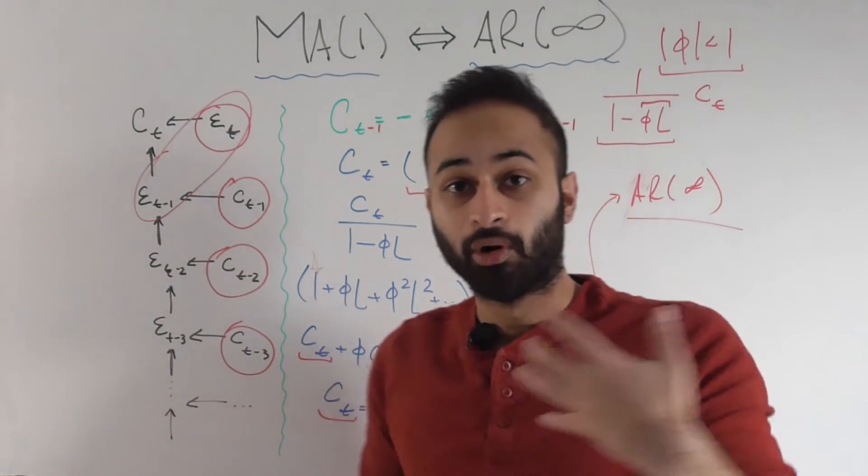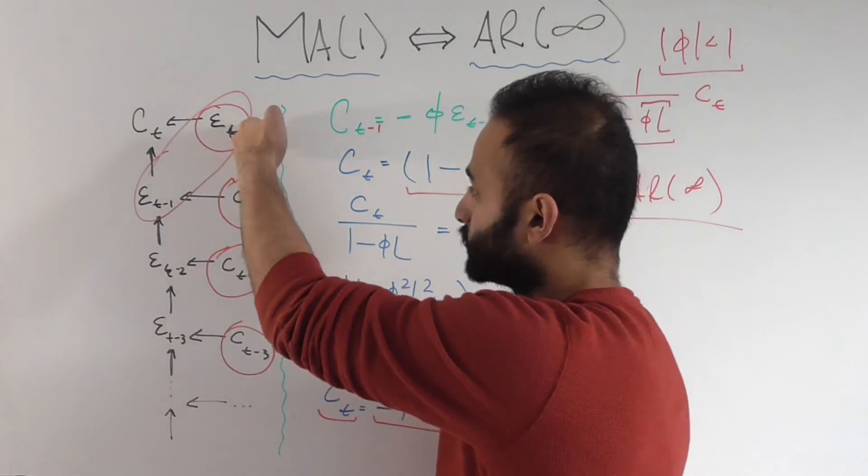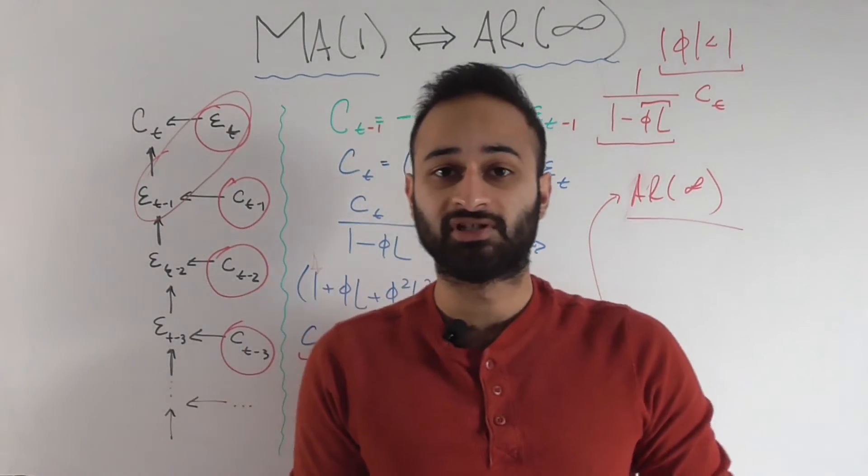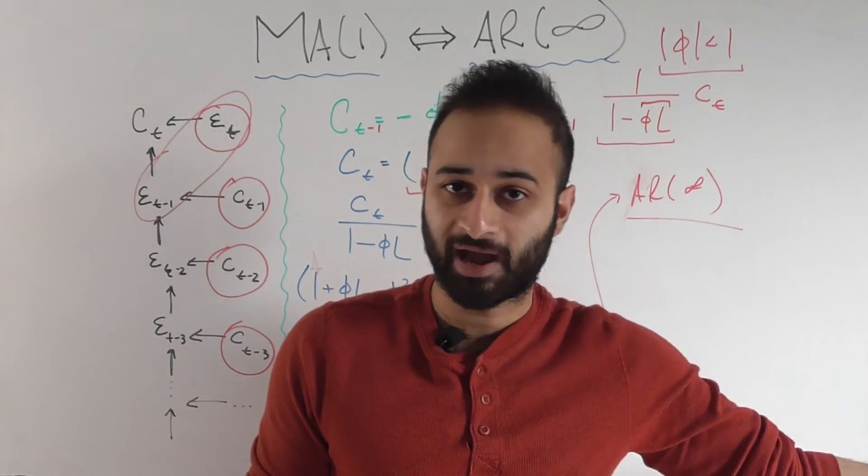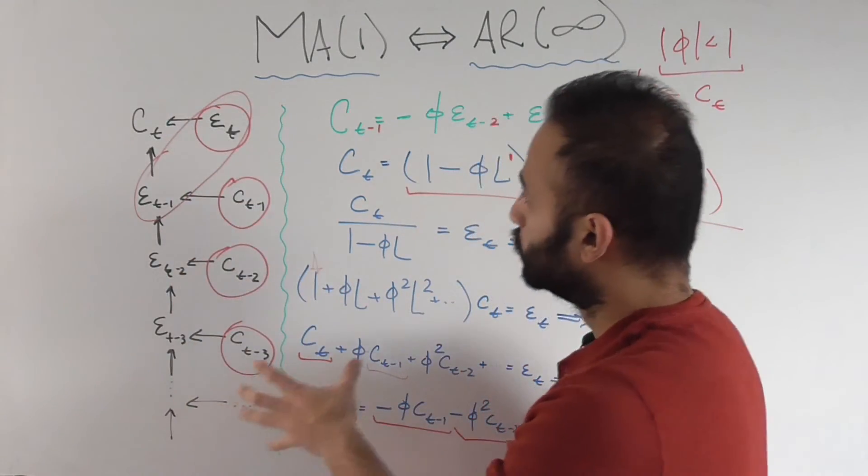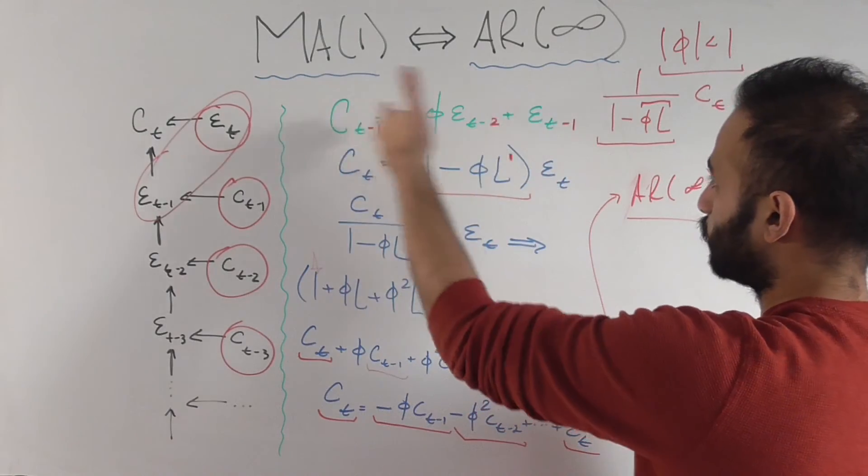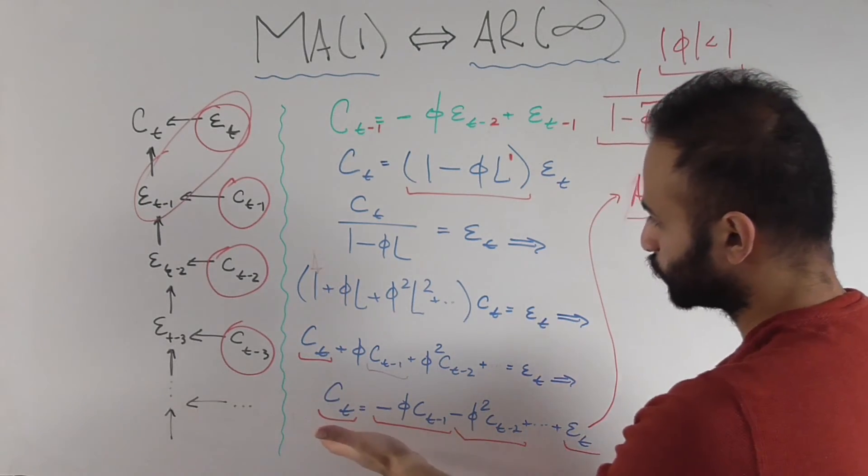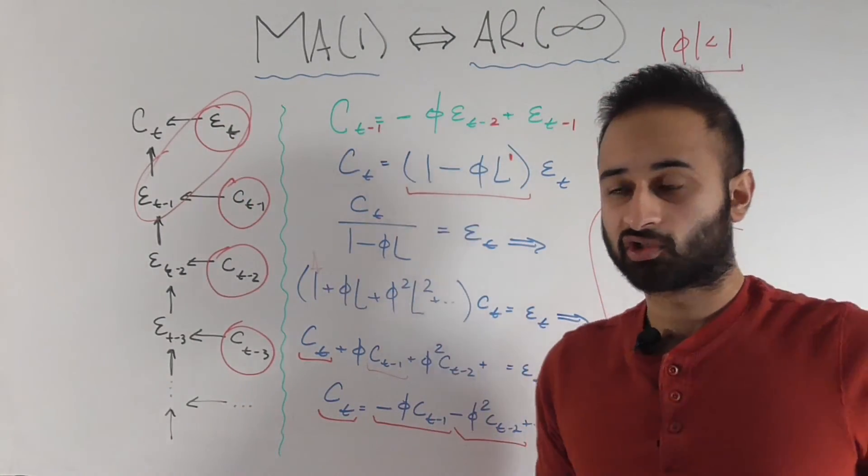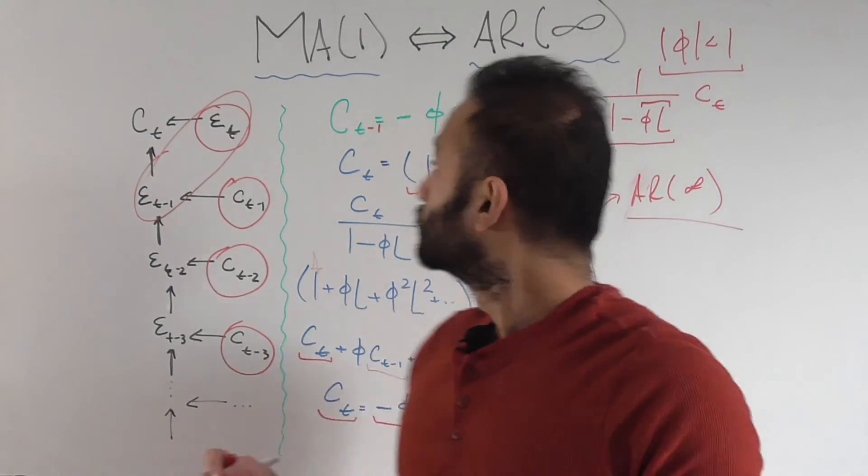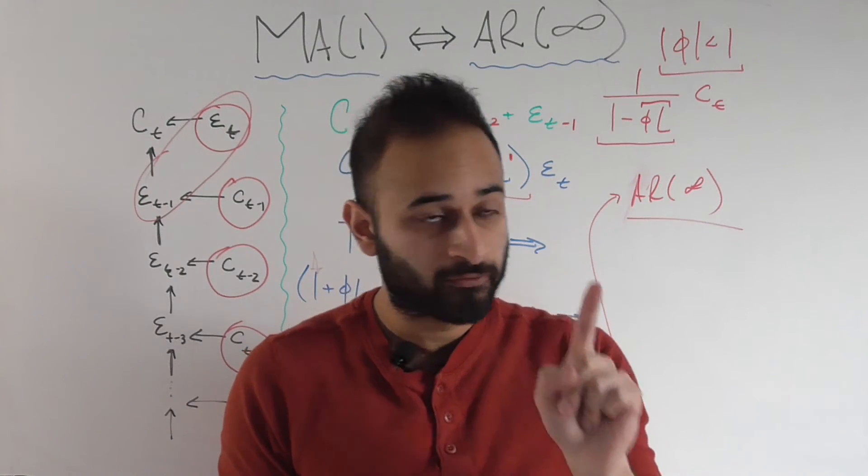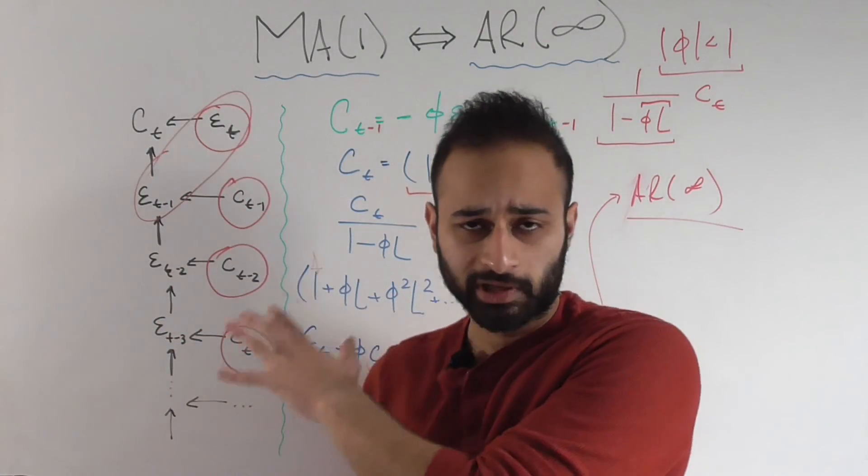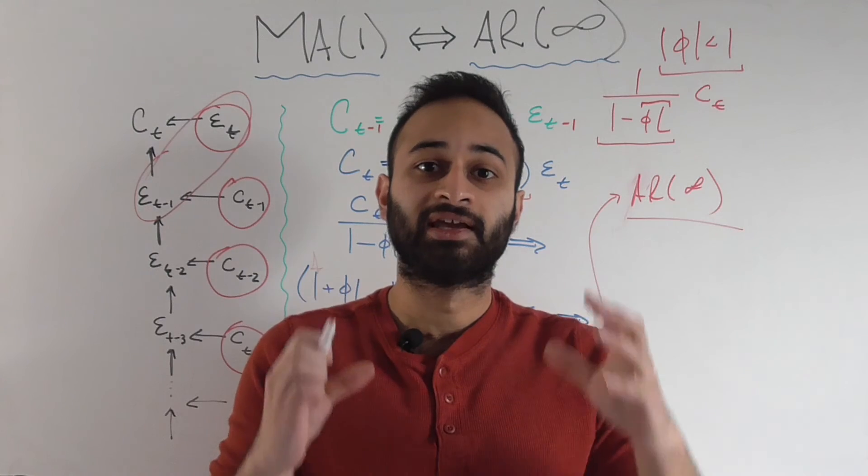So we can say equivalently that C sub T is a function of epsilon sub T, C sub T minus one, C sub T minus two, C sub T minus three, and just the infinite C sub T lags going further and further and further into the past. So if you study this causal chain, you can show and prove to yourself that this first formulation, which is the MA1 formulation, is the same thing as this last formulation, which is the AR infinity formulation. So that's why an MA1 model is equivalent to an AR infinity model if this phi is less than 1 in absolute value. And if it is less than 1 in absolute value, we can go through this whole process and we call the time series invertible.